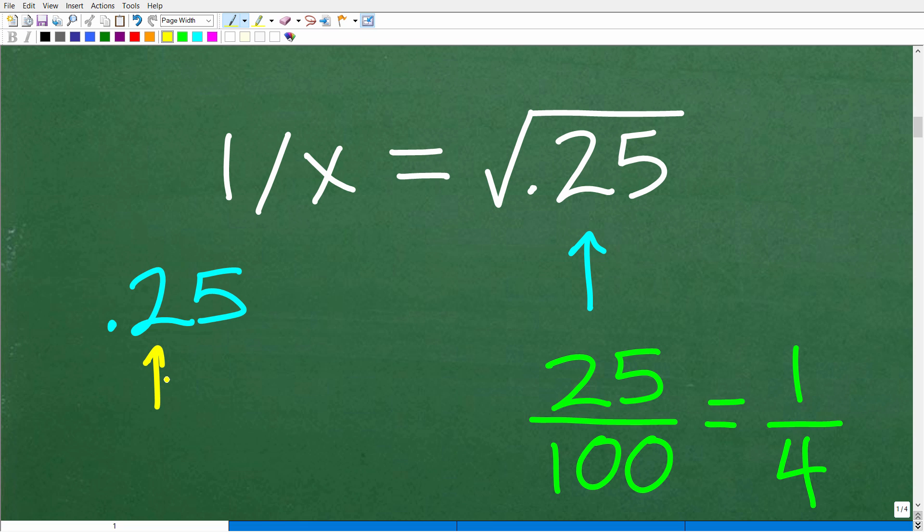So the 2 is in the tenths place and the 5 here is in the hundredths place. So the way place value works is whatever the last digit here is, this is in the hundredths place. So we're going to write a fraction 25 over 100. Okay, so 25 over 100. If you took that 25 divided by 100, you'd get back to 0.25.